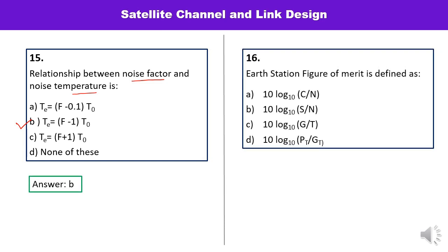Question number 16: the earth station figure of merit is defined as the G/T ratio. Written in dBs it is 10·log(G/T), with base 10. So option C is the correct one.